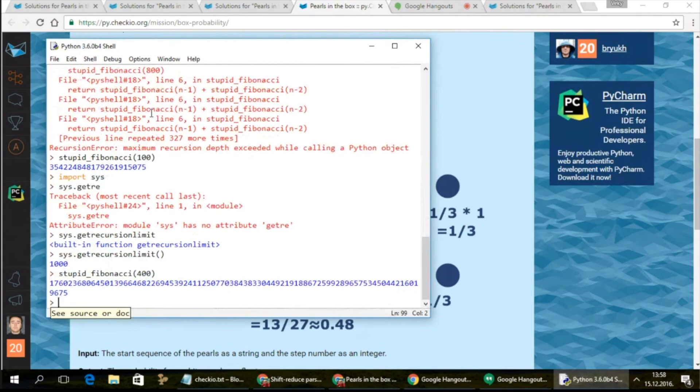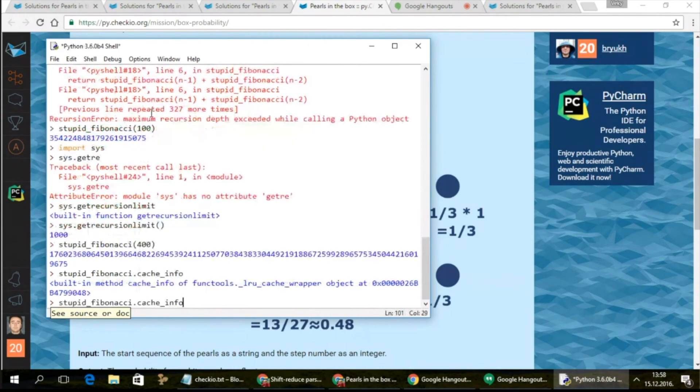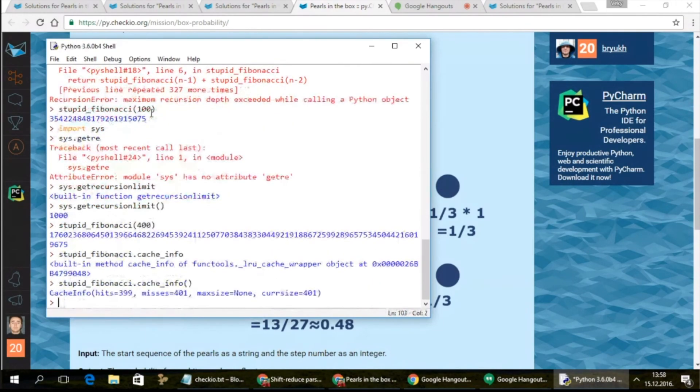But this is not important. What is important, I can now actually calculate those Fibonacci numbers without waiting. And I can also call this special method cache_info. You have 399 hits, 401 misses, you don't have a maximum size and you have a current size of 400. So you can optimize your parameters for the cache if you really want.